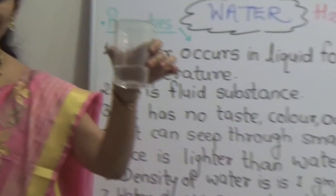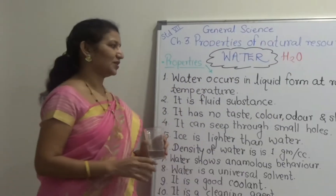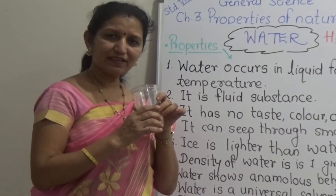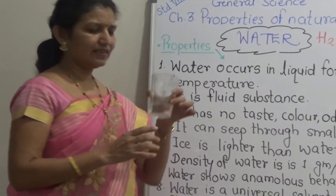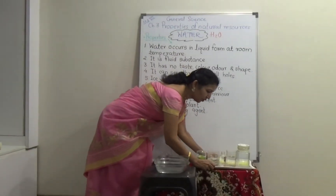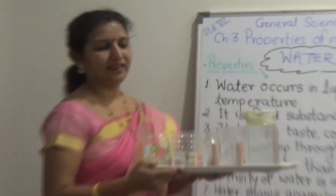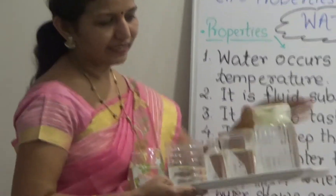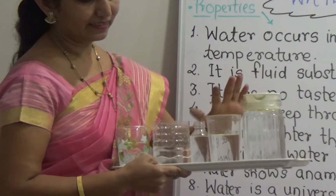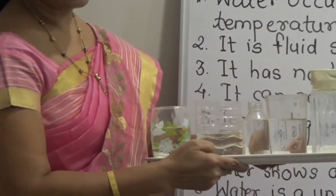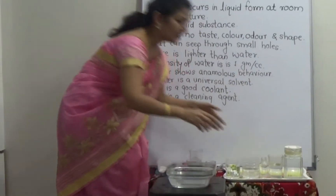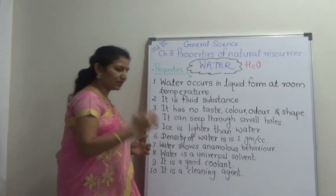Does it have any color? No, it has no color at all. And it has no odor, no smell. Does it have any shape? No, it acquires the shape of its pot. It has acquired the shape of this container, then the shape of a glass, a bottle. In this way, it is proved that it has no shape of its own, but it acquires the shape of the container.